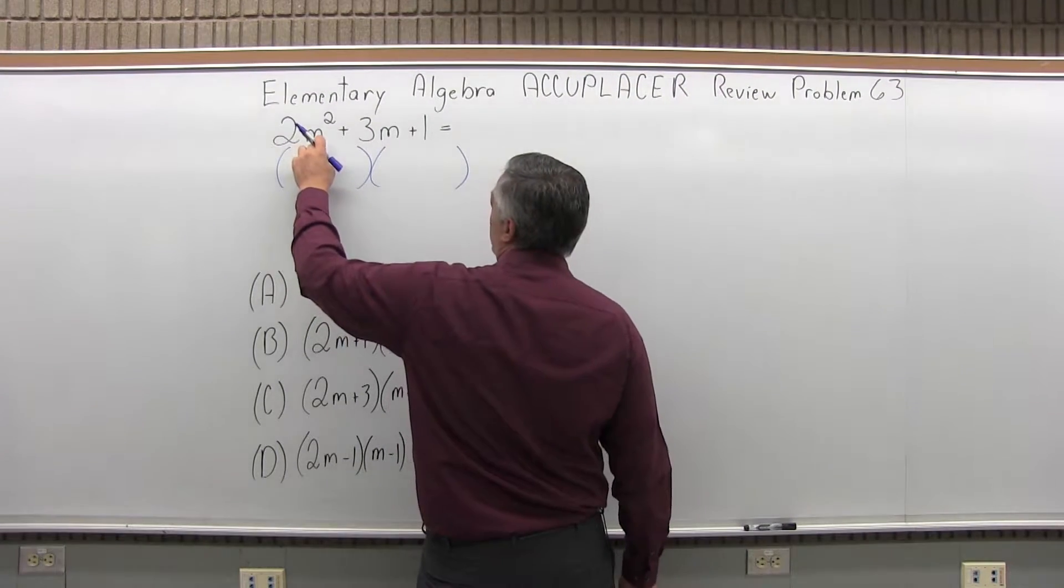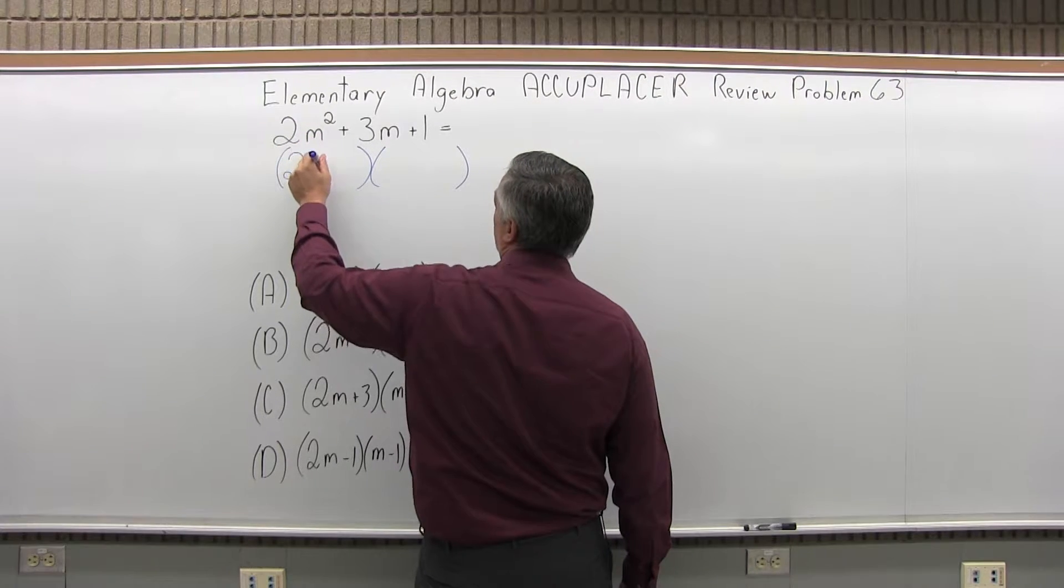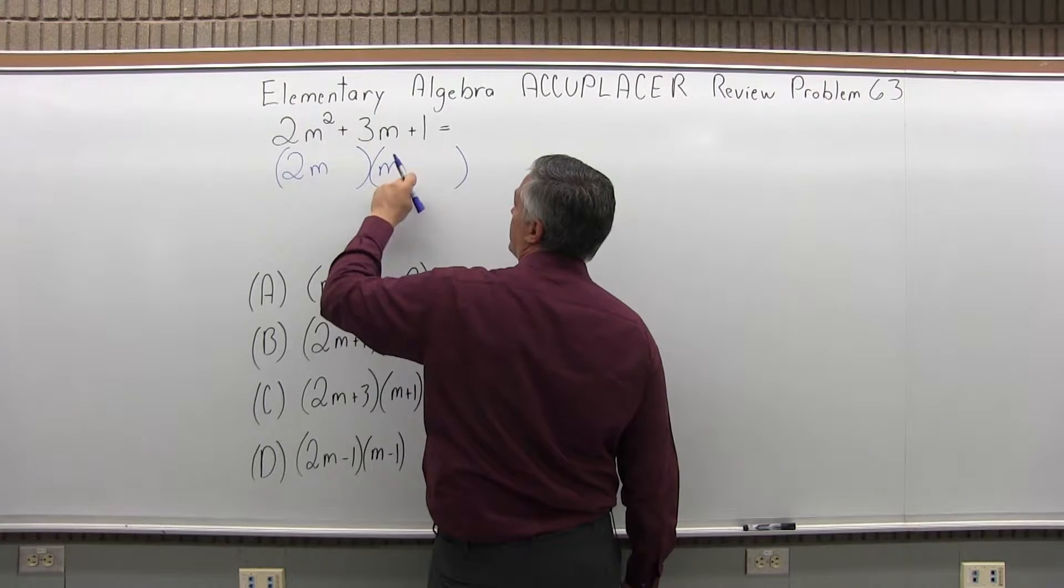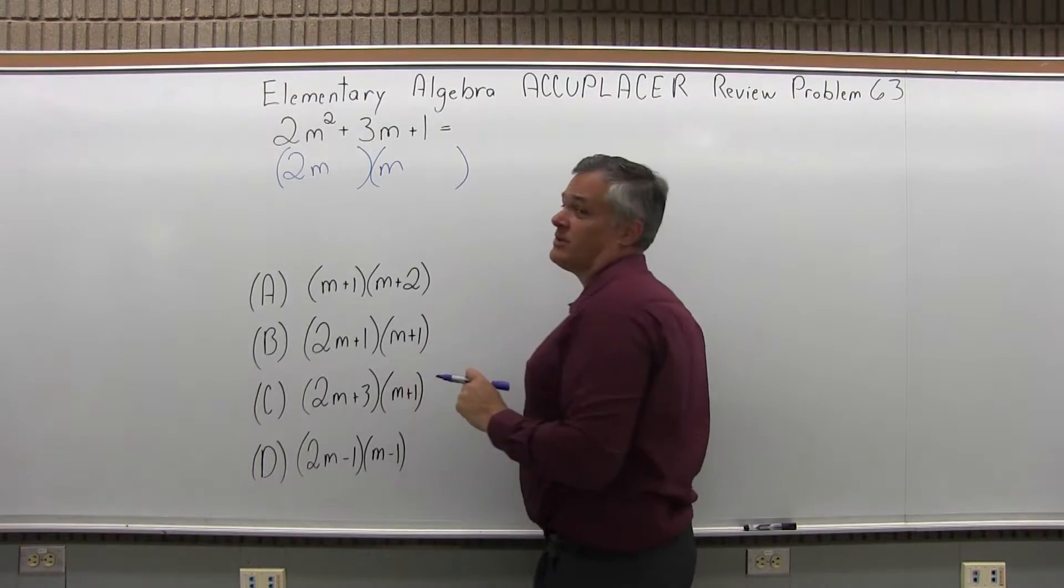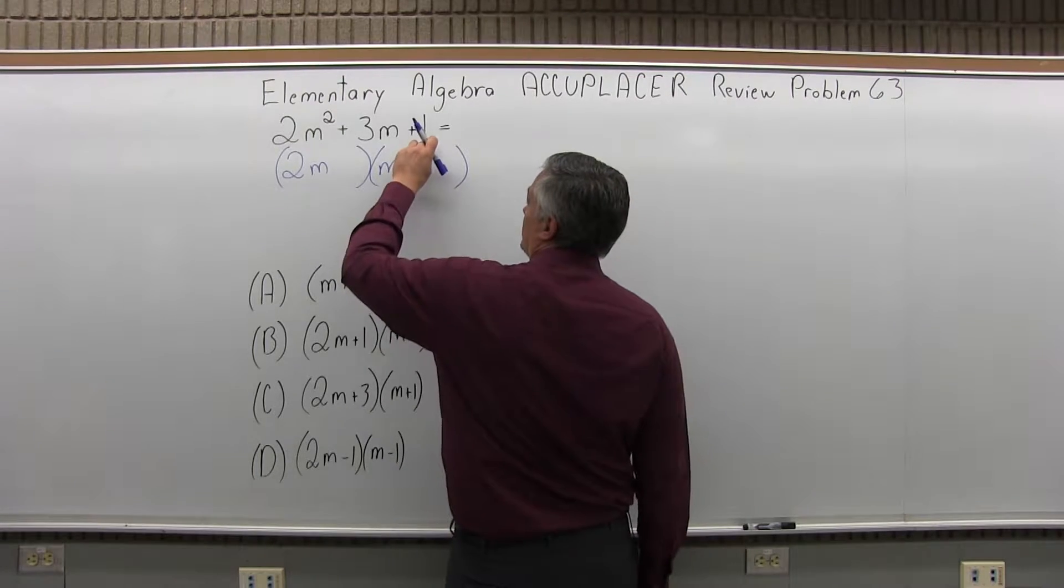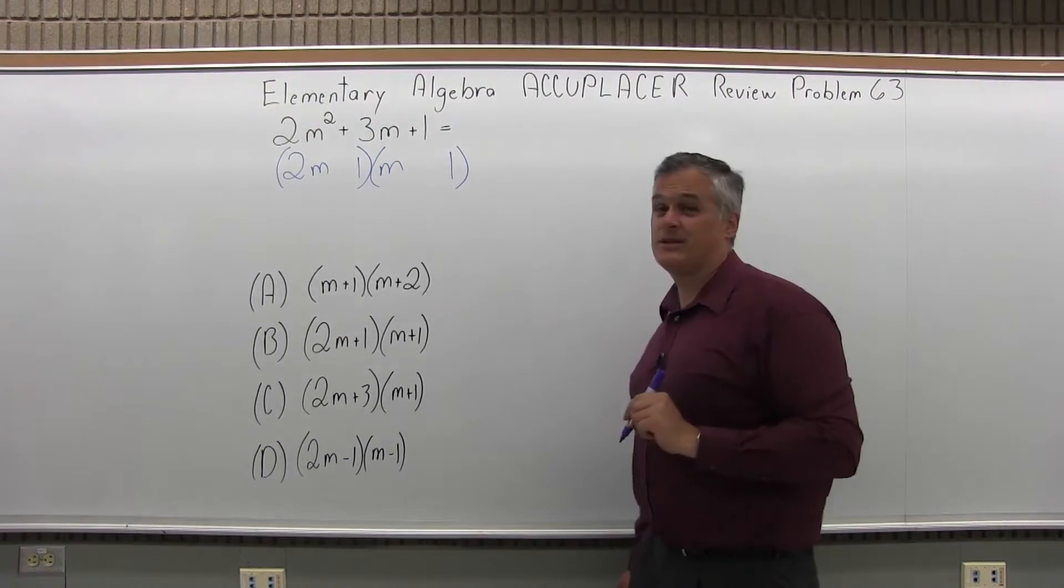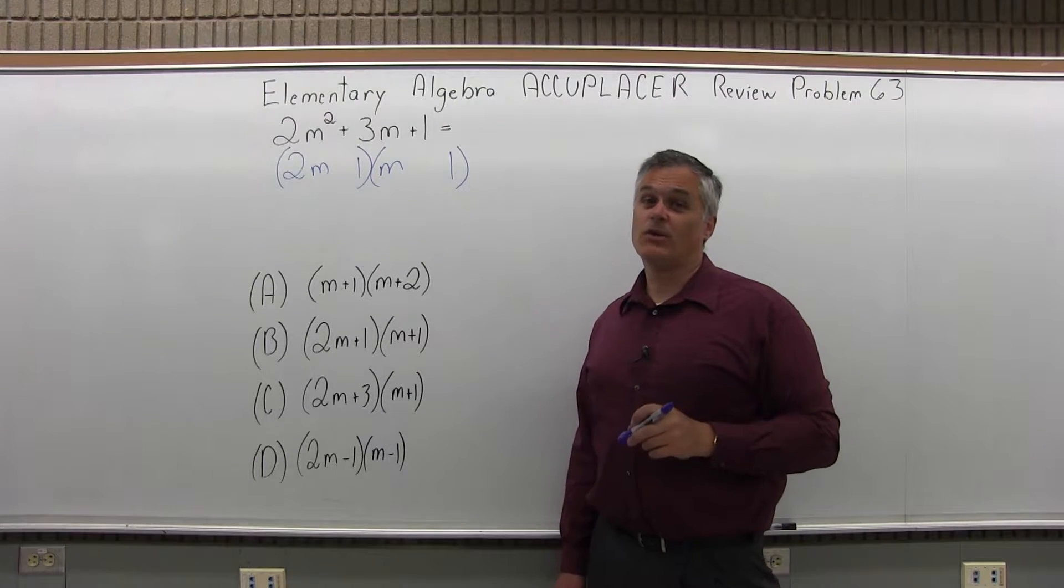Now the 2m² in front, I like just m² in front but there's not much I'm going to be able to do with that. It's going to have to start with 2m and m to give you back 2m² when you multiply it out. Now the piece on the end being just 1, fortunately there's only one way that's going to multiply to get a 1: 1 times 1.